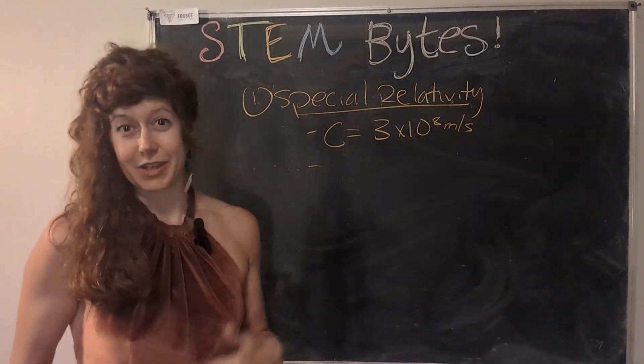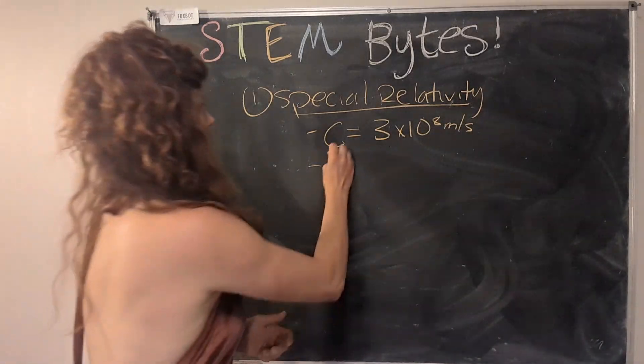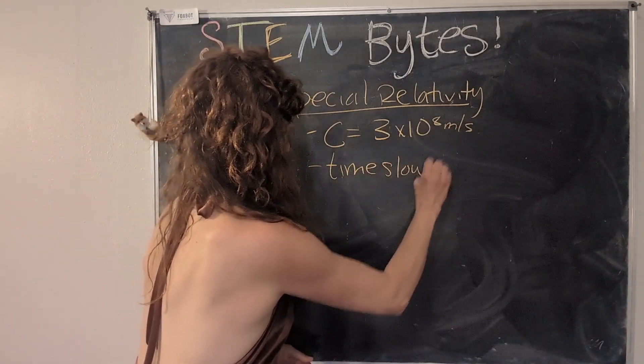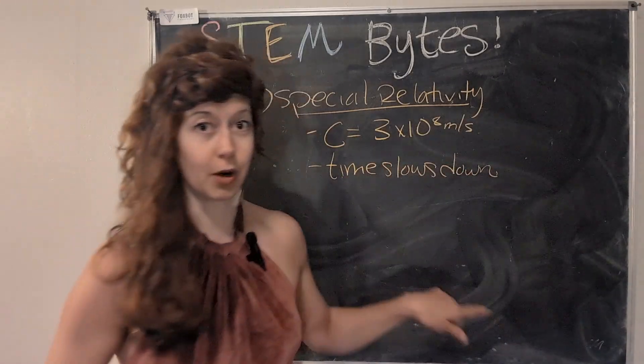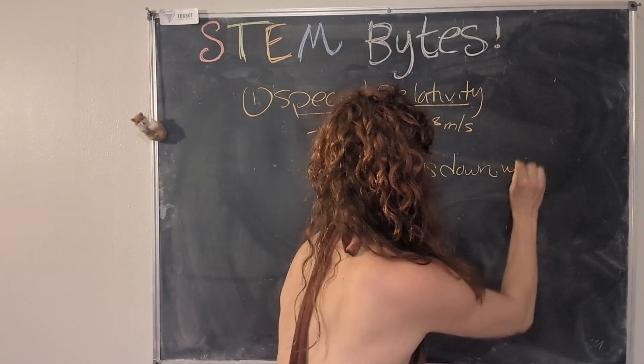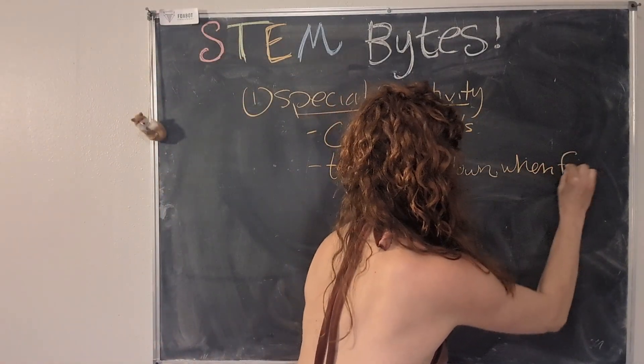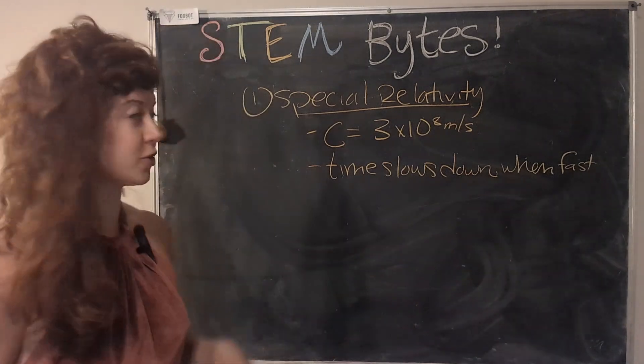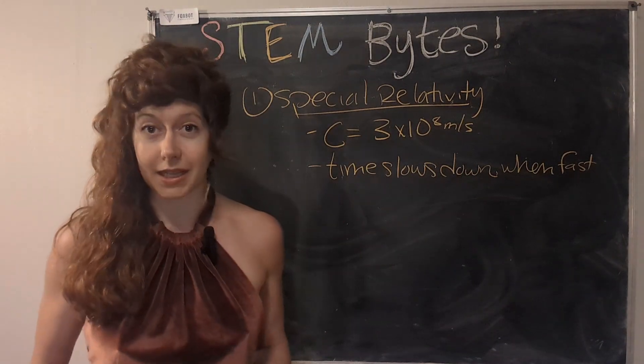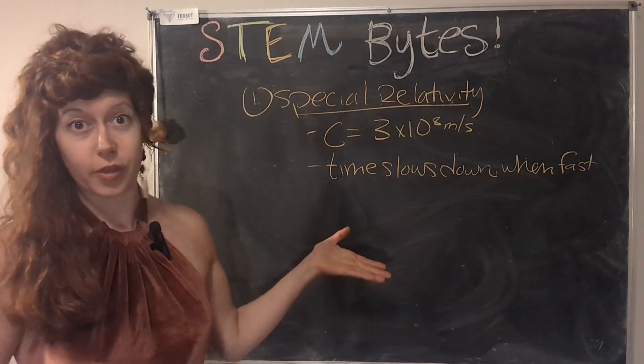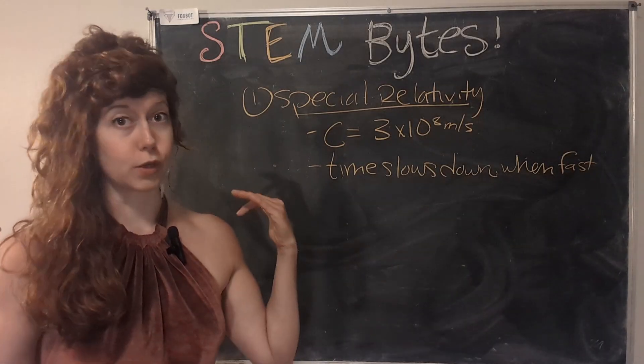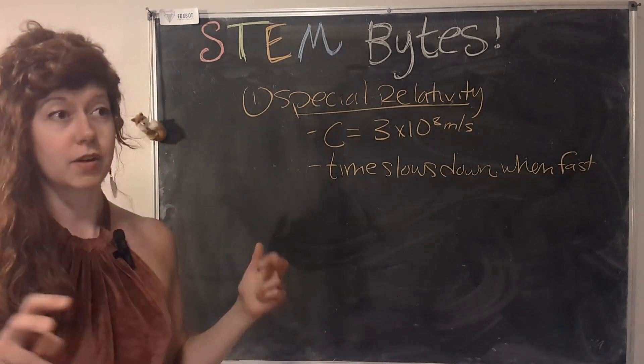The next thing that is wonky and weird is that time slows down when fast. I'm going to take the math and turn it into simple language. This is also known as time dilation. And this is a real thing. We actually have to account for the fact that objects that are moving super duper fast have a slower clock.